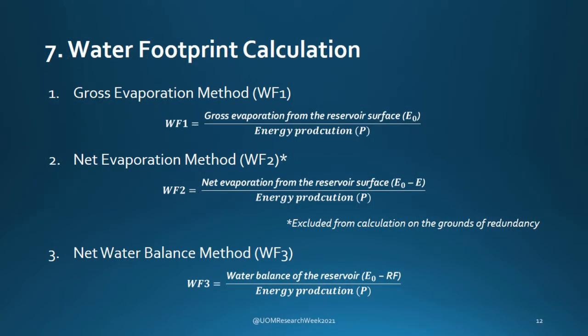Coming to the core of the research, the water footprint calculation. As per the literature review, three water footprint calculation methods were identified. These three methods have been developed for three different approaches. The gross evaporation method evaluates the volume of evaporation from the water surface per unit energy produced, while the net evaporation method takes the difference between direct evaporation before and after the construction of the reservoir per unit energy produced. Since the ROR mini hydropower plants do not have major inundations, the net evaporation method was deemed redundant.